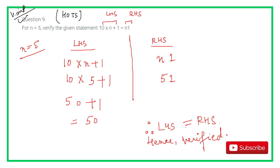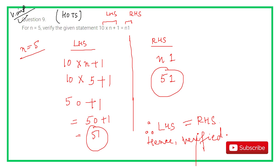To summarize question 9: n equals 5. We solved LHS and RHS separately and got that both equal 51, so LHS equals RHS, which means the statement is verified.